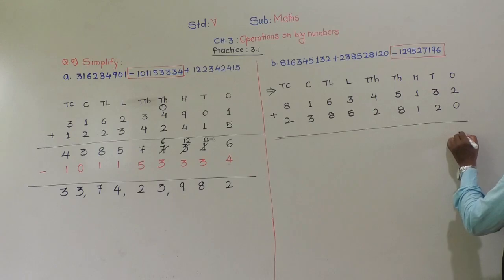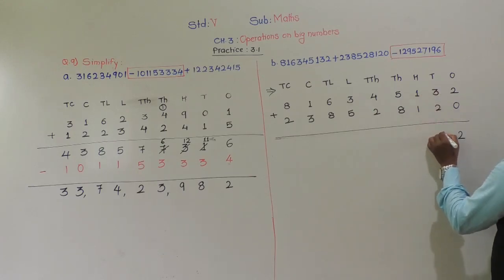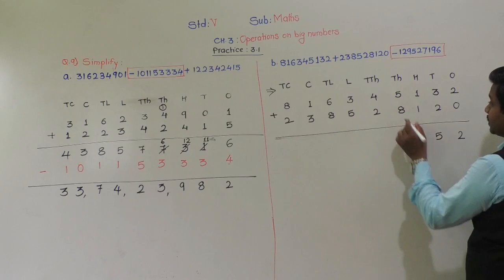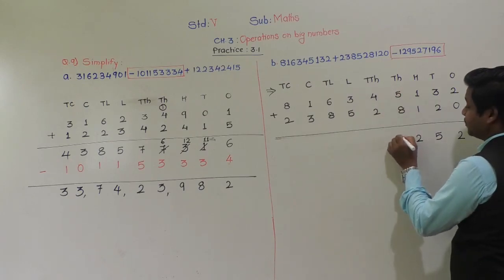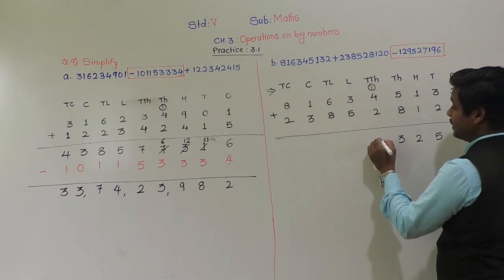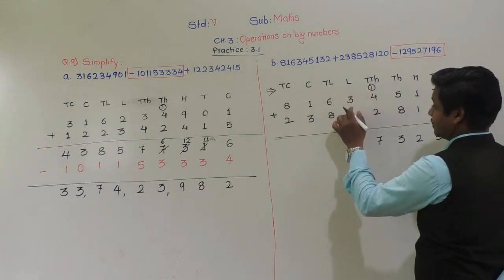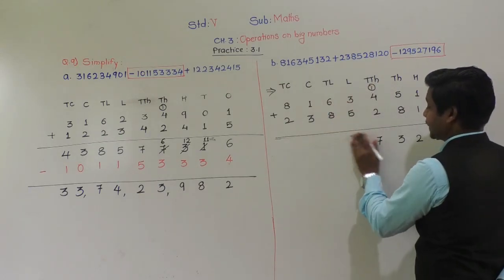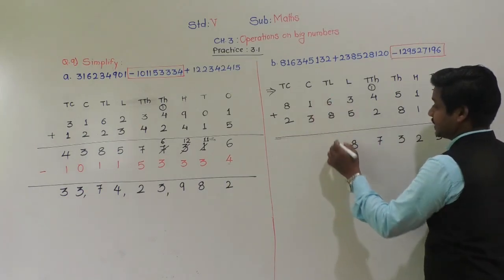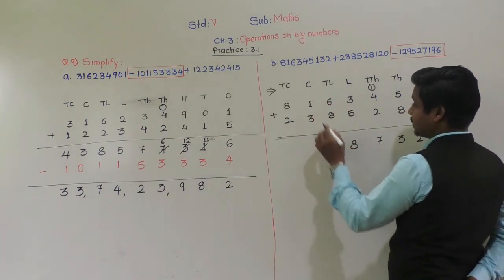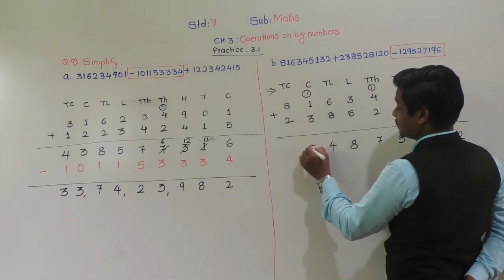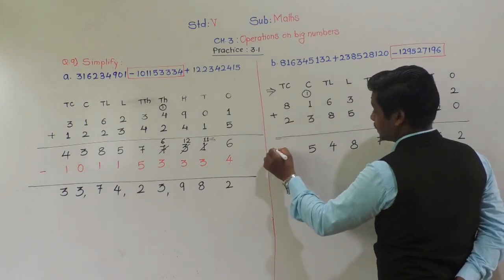Adding: 2 plus 0 is 2, 3 plus 2 is 5, 1 plus 1 is 2, 8 plus 5 is 13 — write 3 carry 1, 4 plus 2 plus 1 is 7, 3 plus 5 is 8, 6 plus 8 is 14 — write 4 carry 1, 3 plus 1 plus 1 is 5, 8 plus 2 is 10. So the sum is 103 crore 85,77,964 — we carry forward.